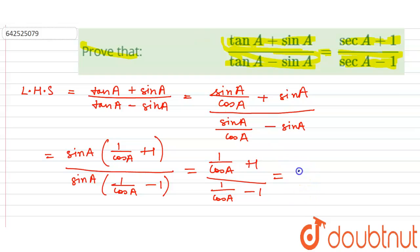So this gives sec A plus 1 over sec A minus 1.